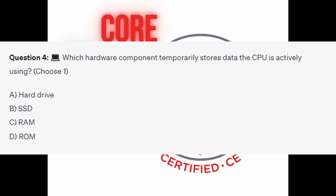Question 4. Which hardware component temporarily stores data the CPU is actively using? Choose one. Is it A, hard drive? Is it B, SSD? Is it C, RAM? Or is it D, ROM?